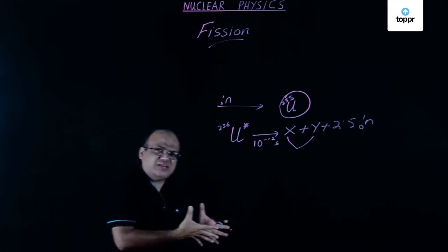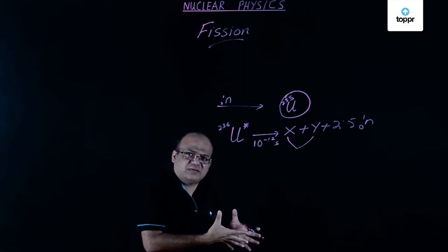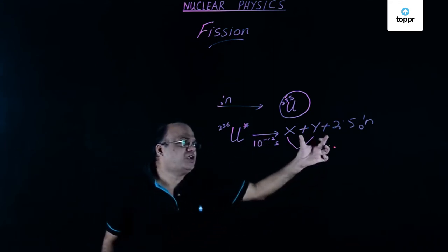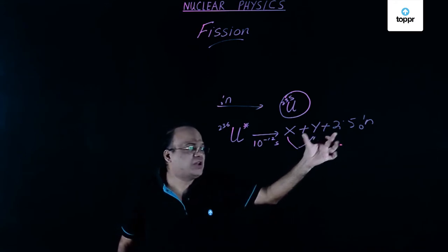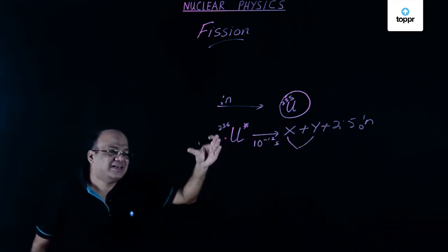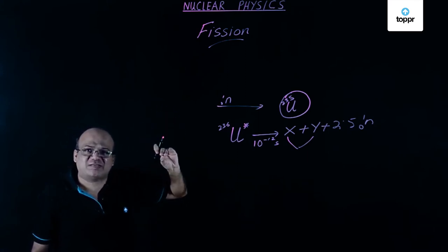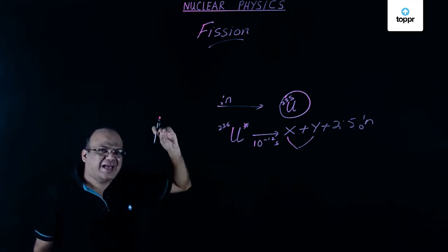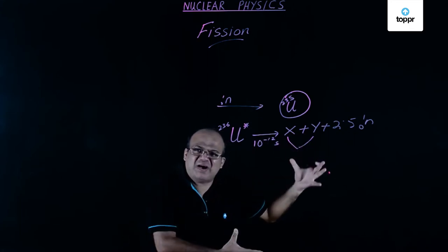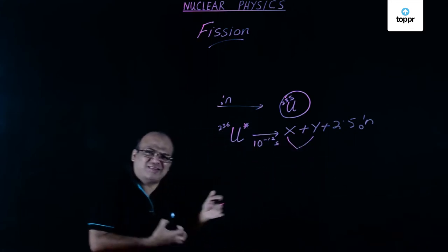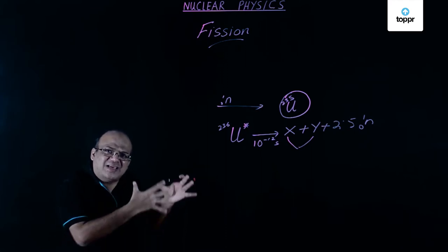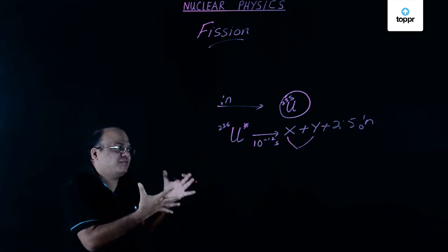So from where is this energy coming? This energy is coming because the total mass of the daughter nuclei including the neutrons is less than the mass of the parent nucleus. The difference in mass is called mass defect, and that is released as energy — the energy equivalent to mass defect.